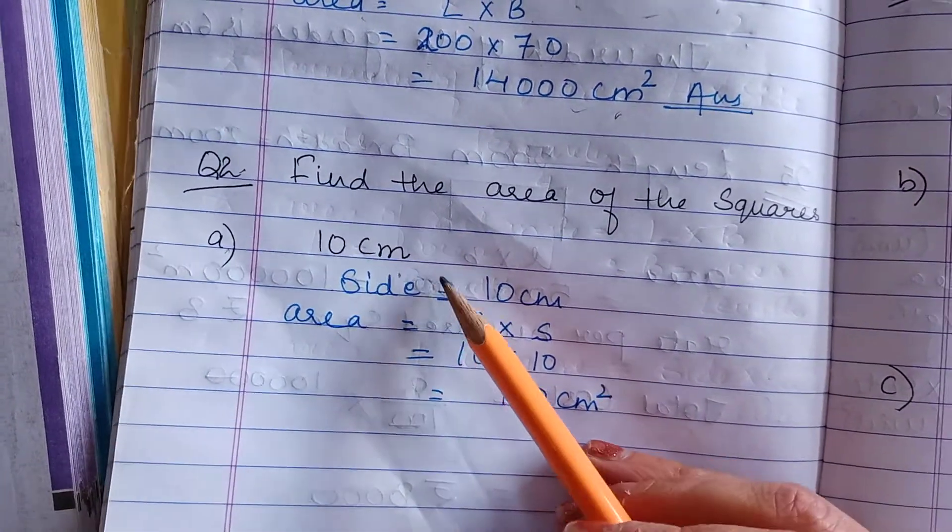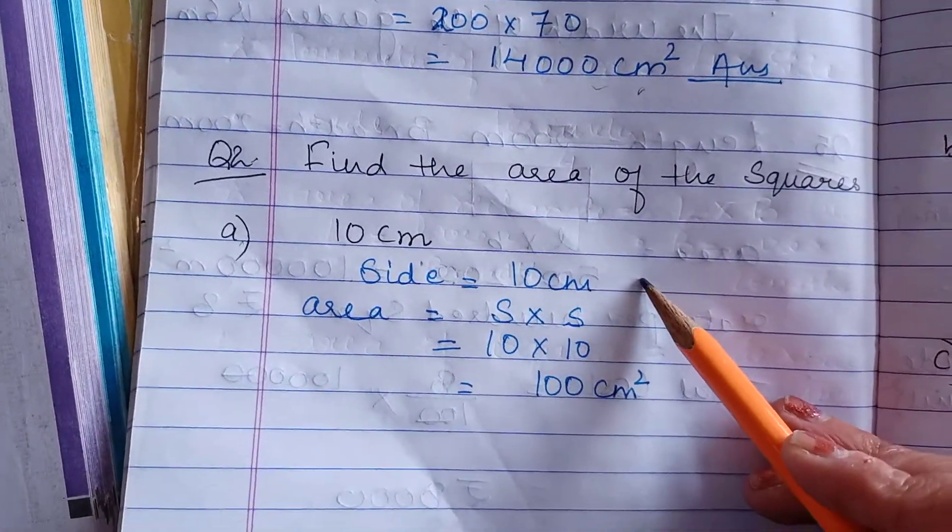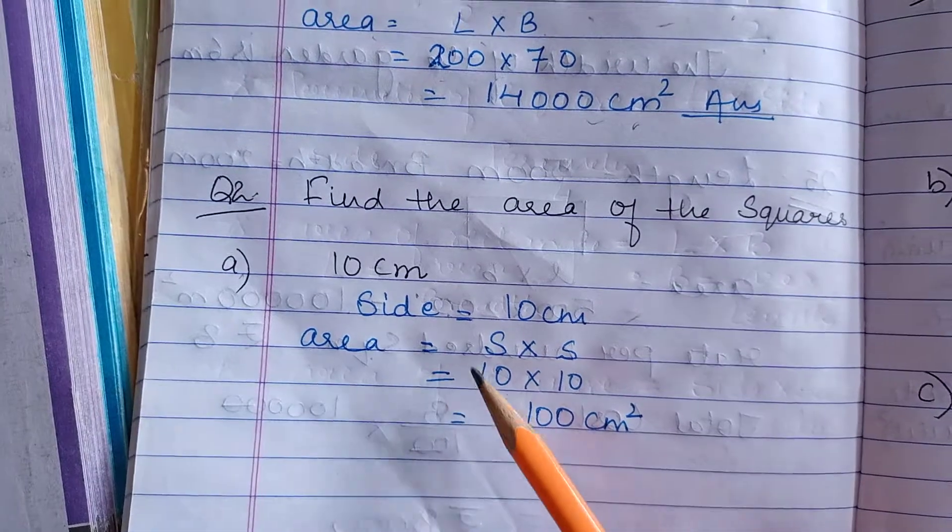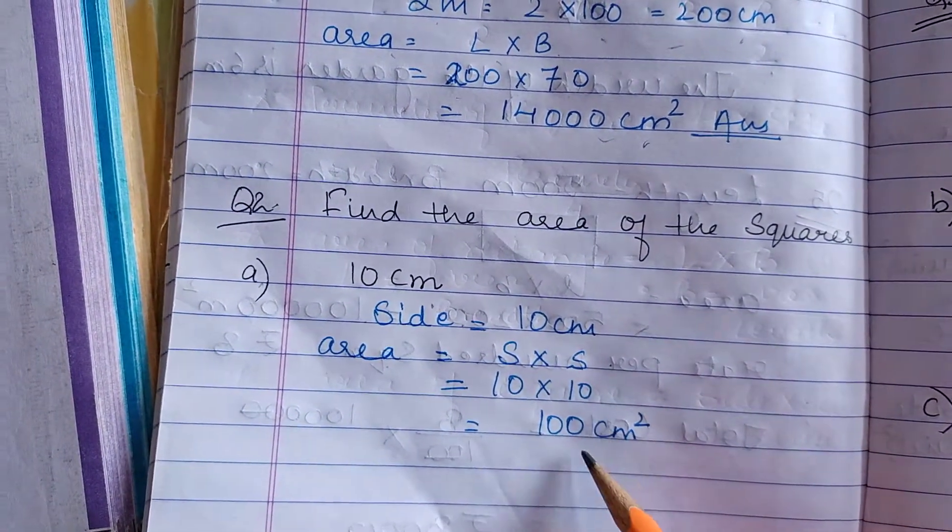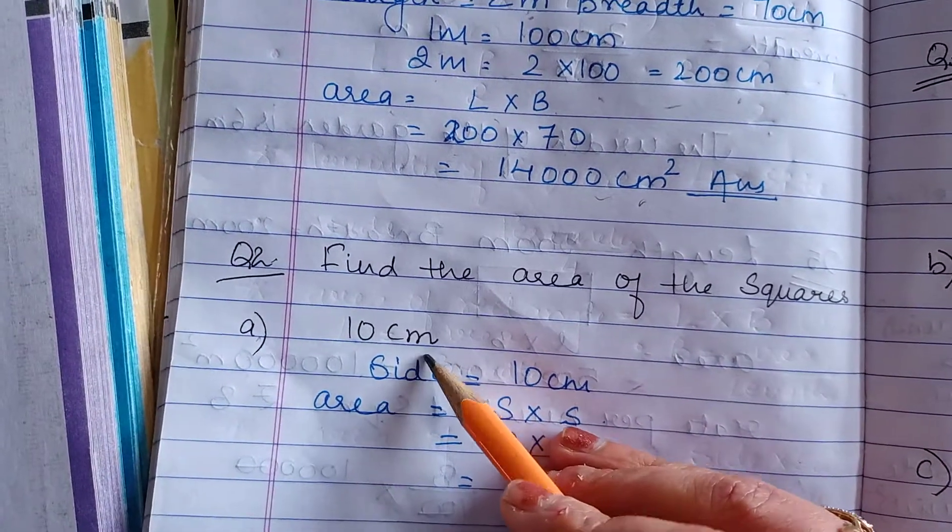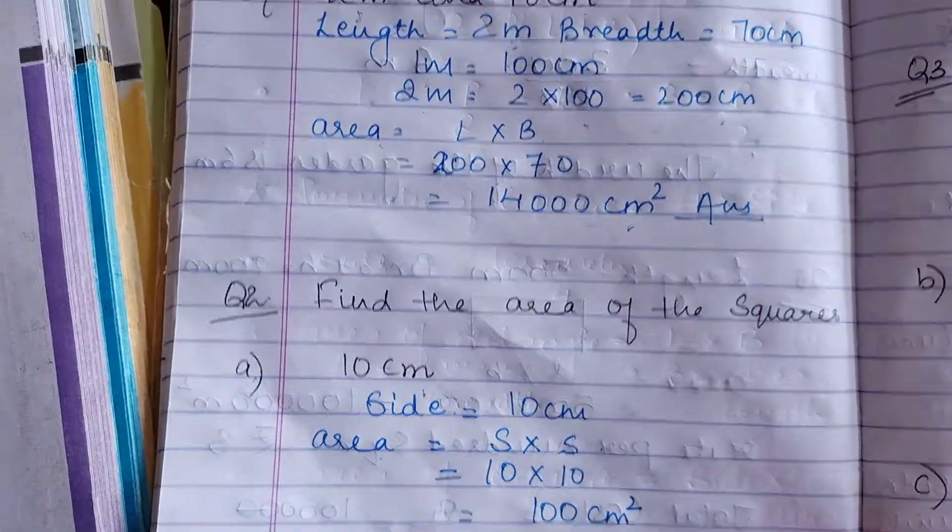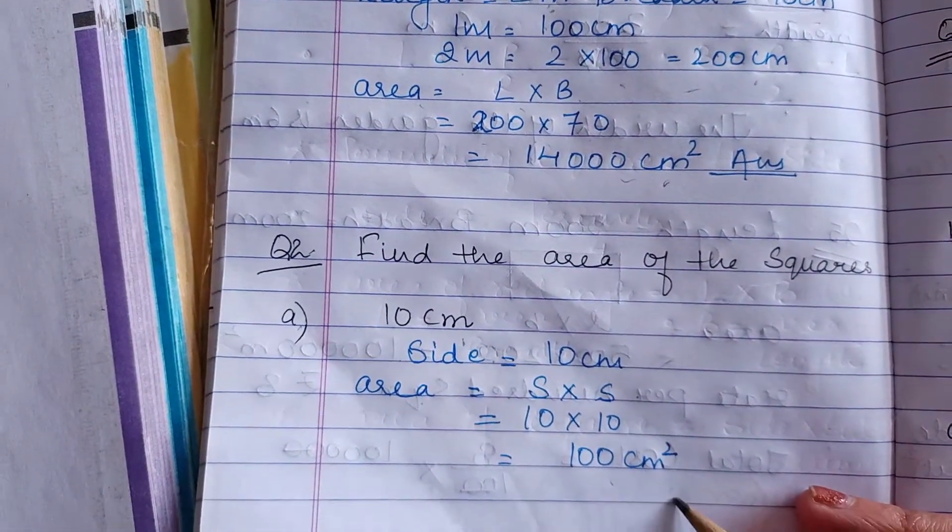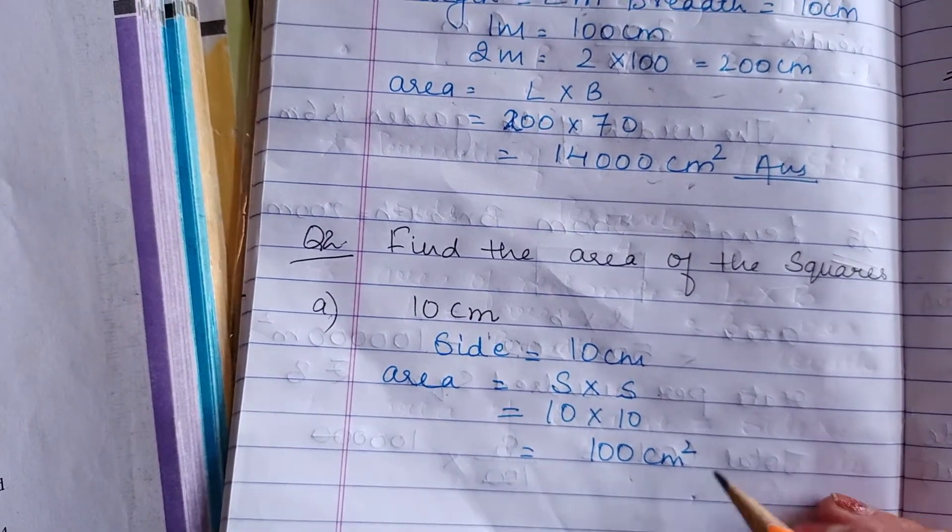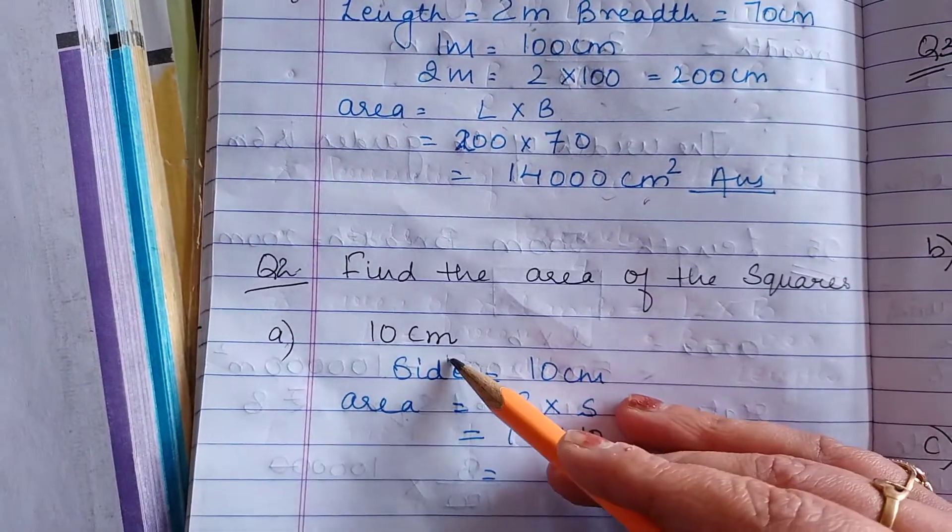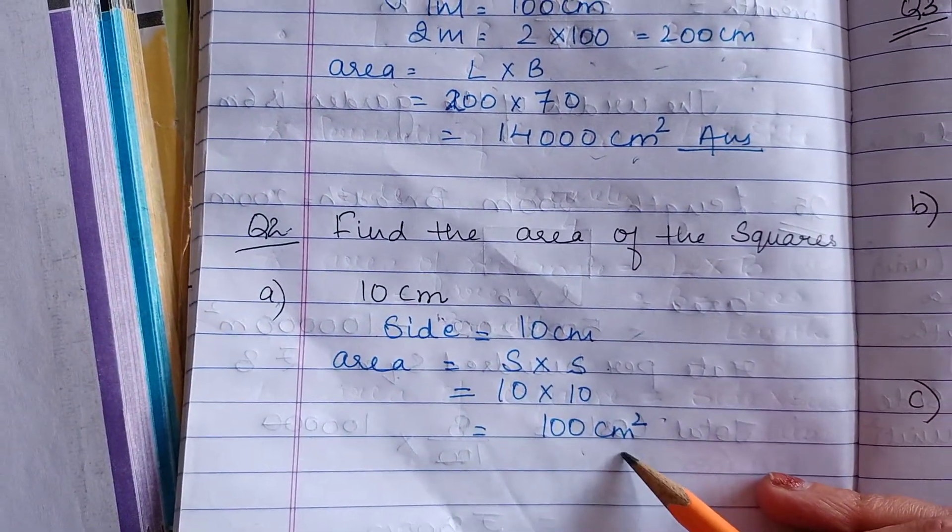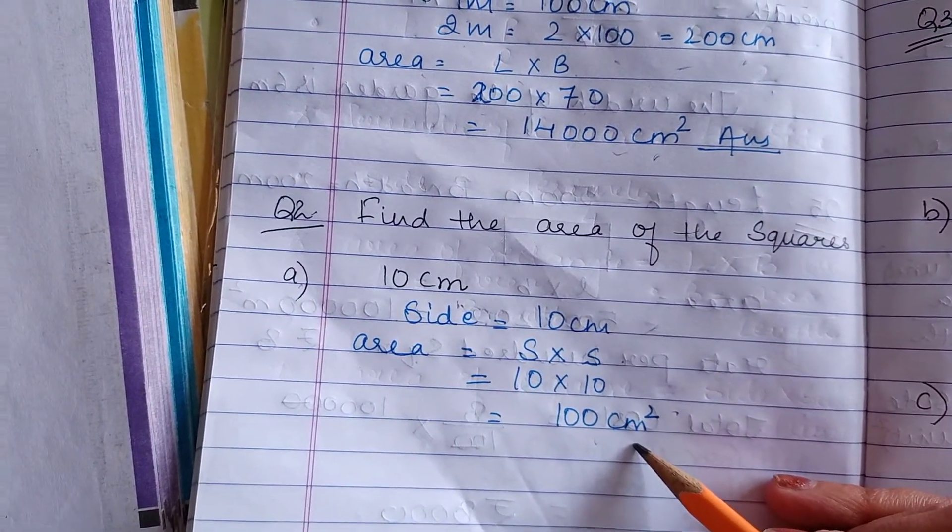10 cm. Side is 10 cm. We have to find the area. Formula is side multiplied by side. So 10 multiplied by 10 is 100 and the unit is cm. Always whenever we are finding the area of any specific figure, the answer will have this square with the unit. So here the unit is cm. The answer is 100 cm².